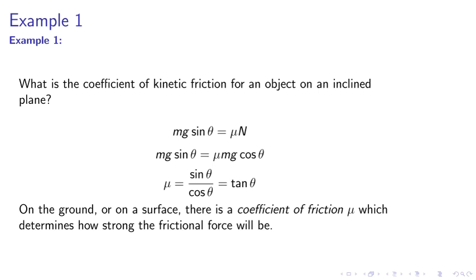Example 1. What is the coefficient of kinetic friction for an object on an inclined plane? Well, we use mg sine theta equals mu N, mg sine theta equals mu mg cosine theta, mu equals tan theta. So on the ground or on a surface, there is a coefficient of friction which determines how strong the frictional force will be.